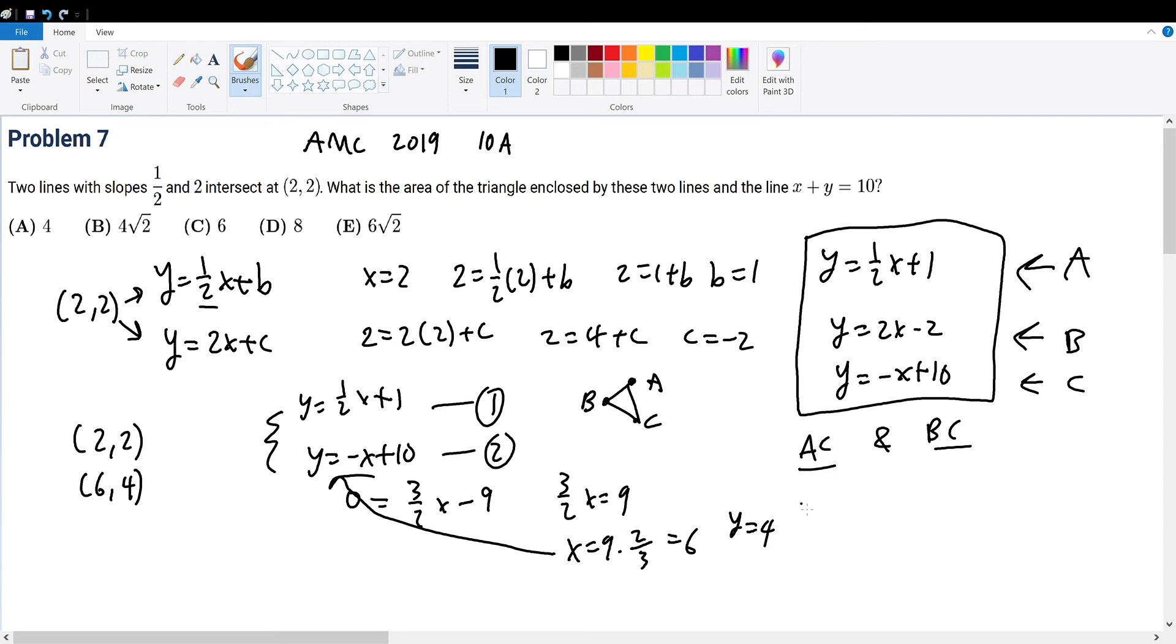Now what about the third point? Well, the third point will be the intersection between lines B and C. So we solve for lines B and C. Y equals 2x minus 2. And for C, y equals negative x plus 10.